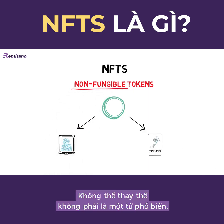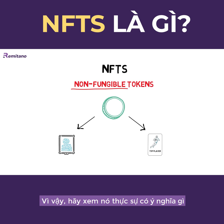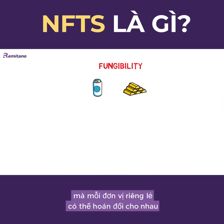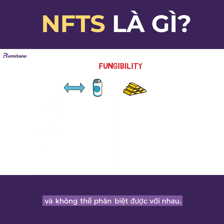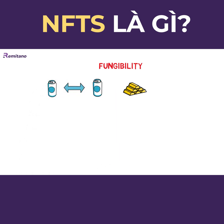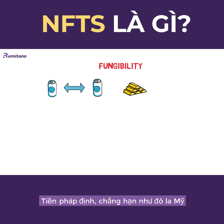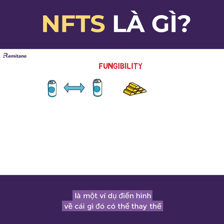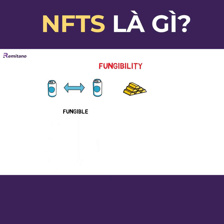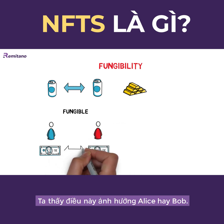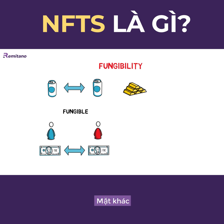Non-fungible is not a very popular word, so let's see what it really means. In economics, fungibility is the characteristic of goods or commodities where each individual unit is interchangeable and indistinguishable from each other. Fungibility is best explained with an example. Fiat money such as the US dollar is a good example of something fungible. If Alice has a $5 banknote, she can replace her banknote with Bob's $5 banknote without this affecting Alice or Bob.